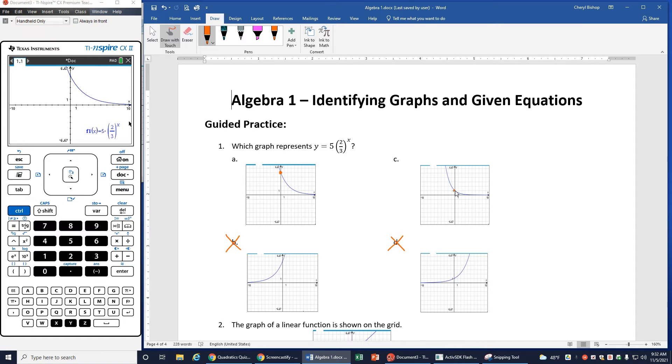So then another thing I can check is where do we intercept the y axis? Here and here. So notice I'm intercepting at 1 way down low here, and I'm intercepting, it looks like 1, 2, 3, 4, 5 here.